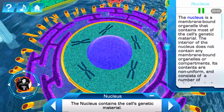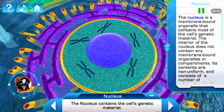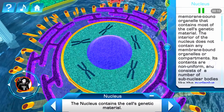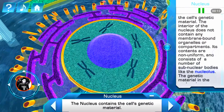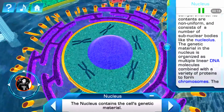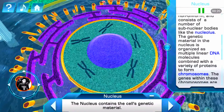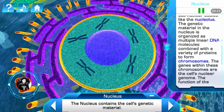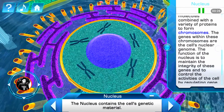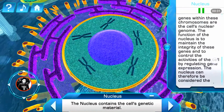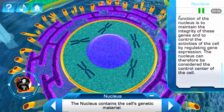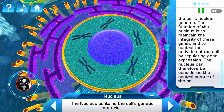The nucleus is a membrane-bound organelle that contains most of the cell's genetic material. The interior of the nucleus does not contain any membrane-bound organelles or compartments; its contents are non-uniform and consist of a number of sub-nuclear bodies like the nucleolus. The genetic material in the nucleus is organized as multiple linear DNA molecules combined with a variety of proteins to form chromosomes. The genes within these chromosomes are the cell's nuclear genome.